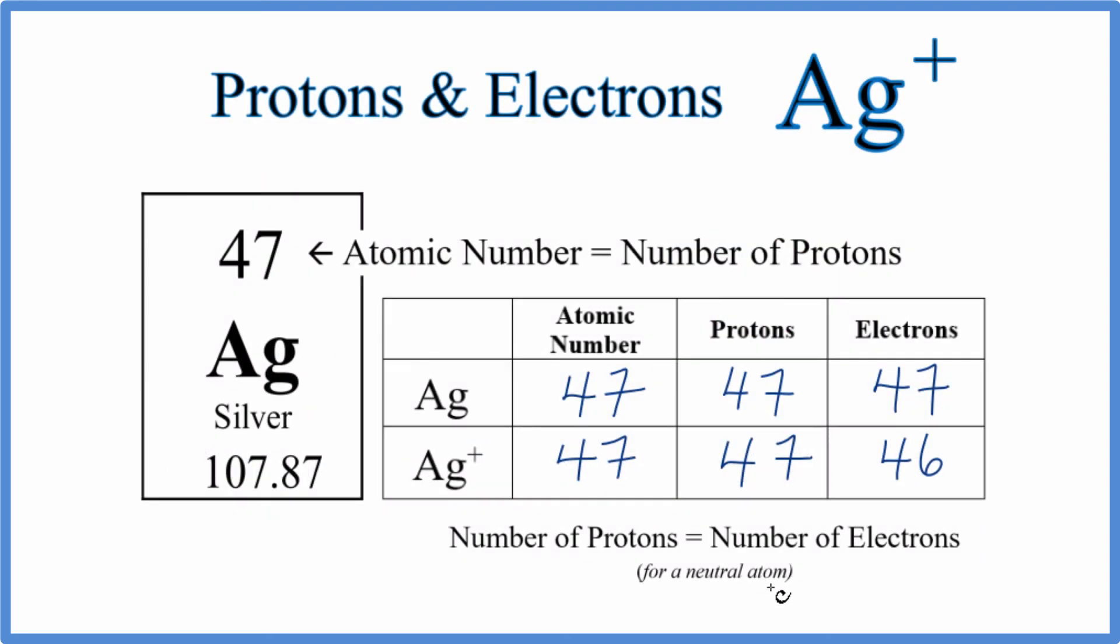If you need help finding the number of neutrons for the different isotopes of silver, there's a link in the description of this video to help. This is Dr. B with the number of protons and electrons in Ag+, the silver ion. Thanks for watching.